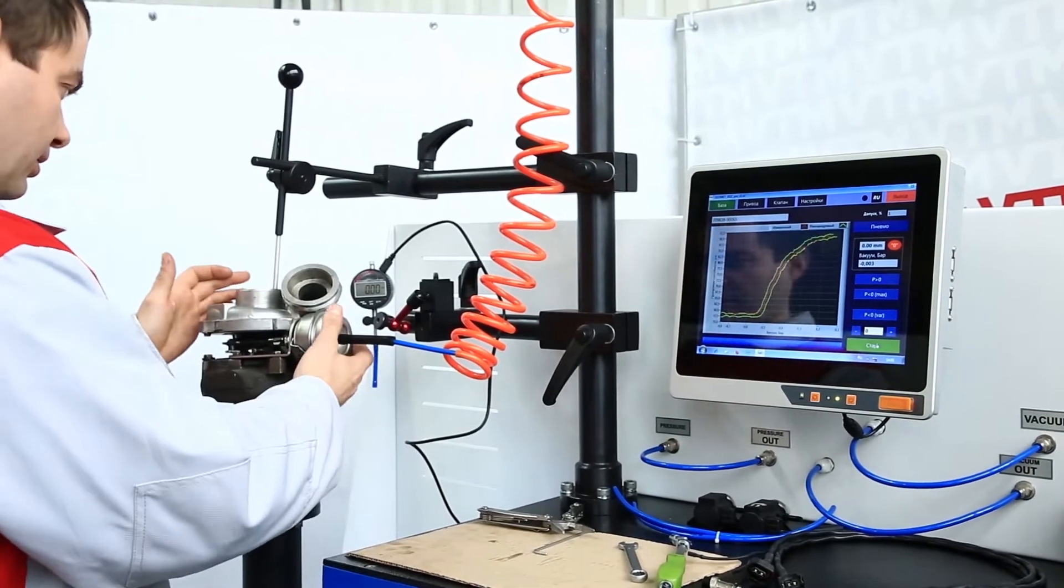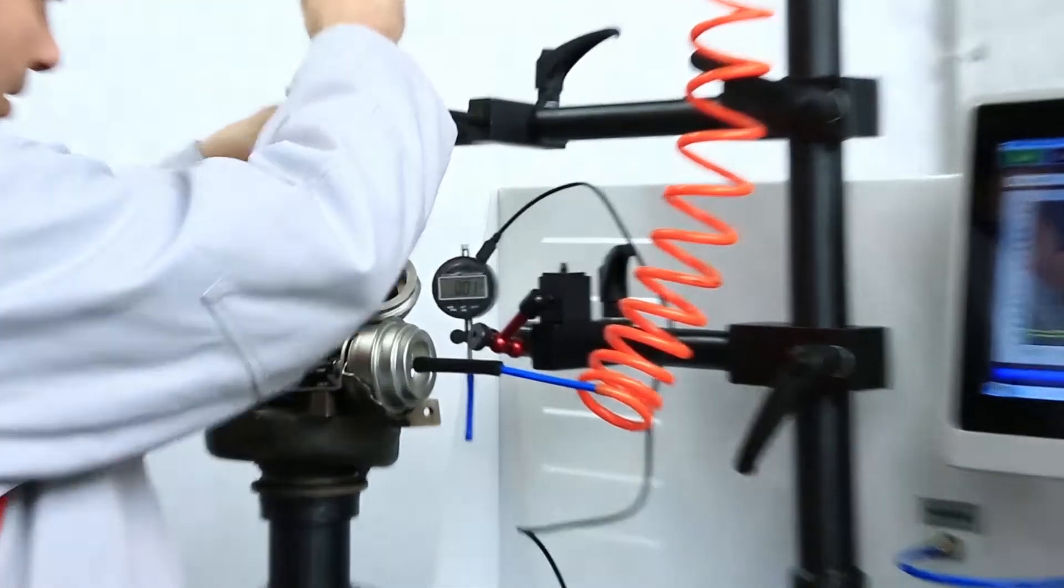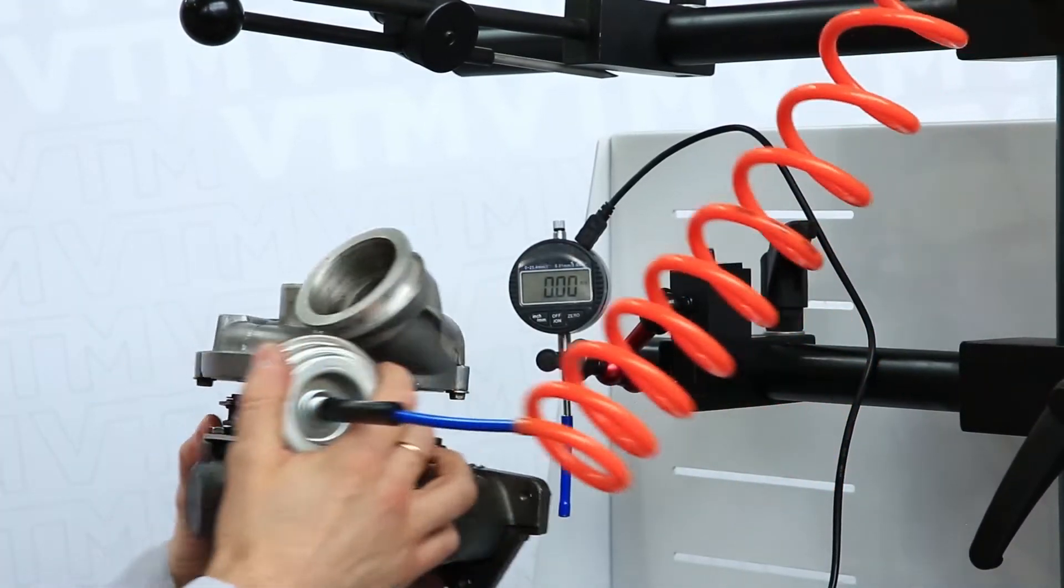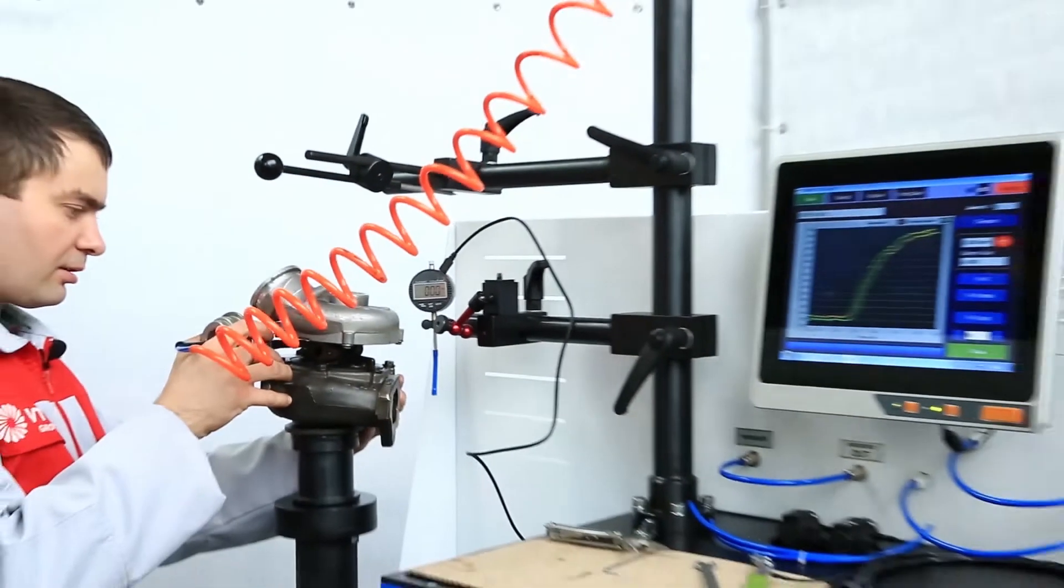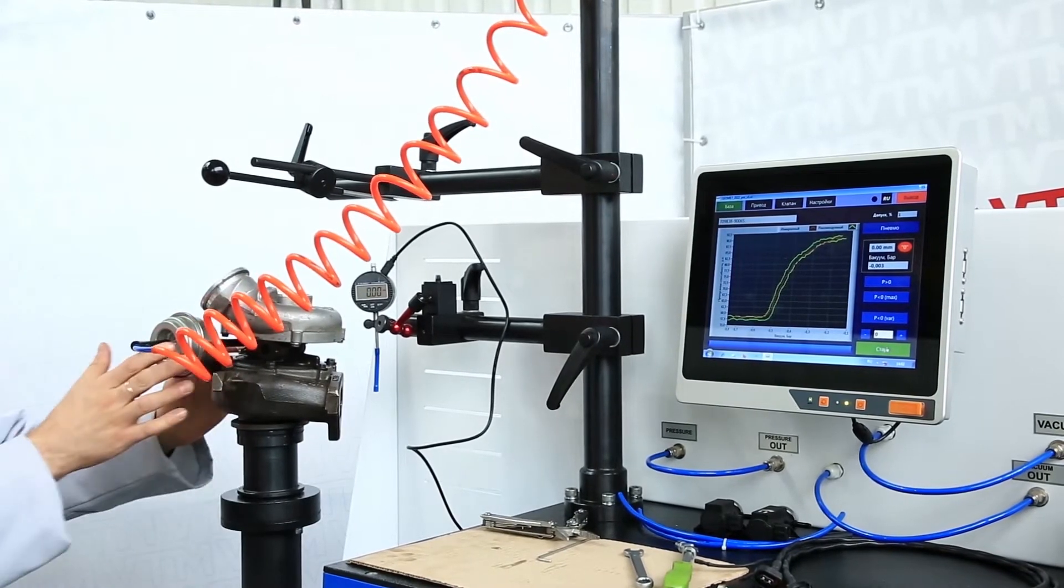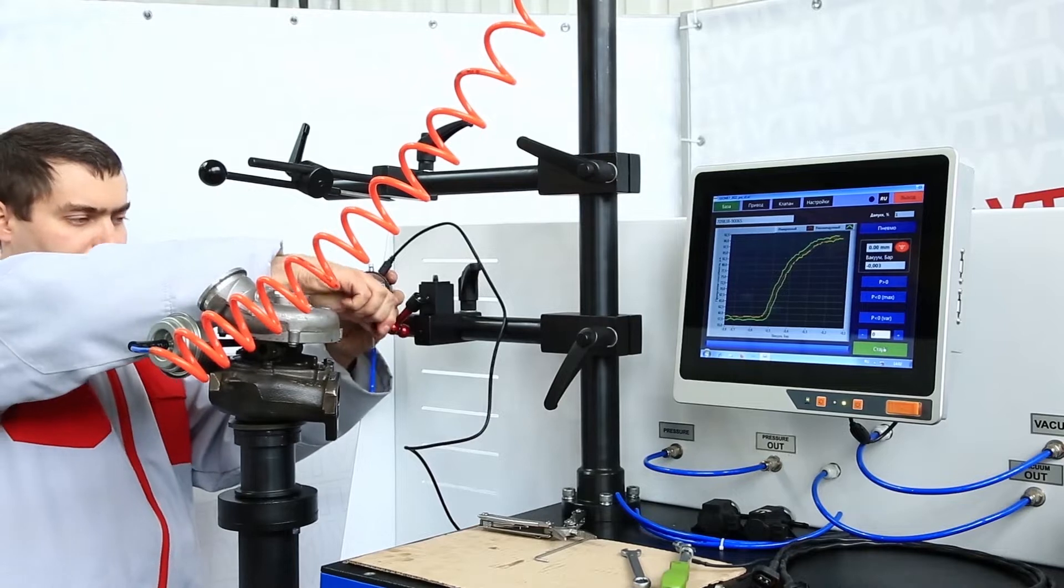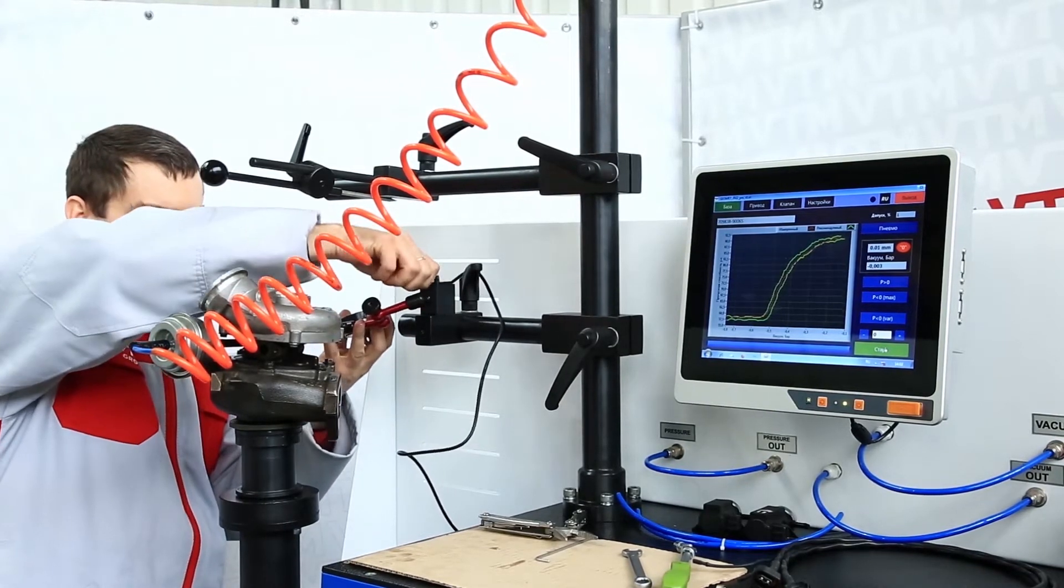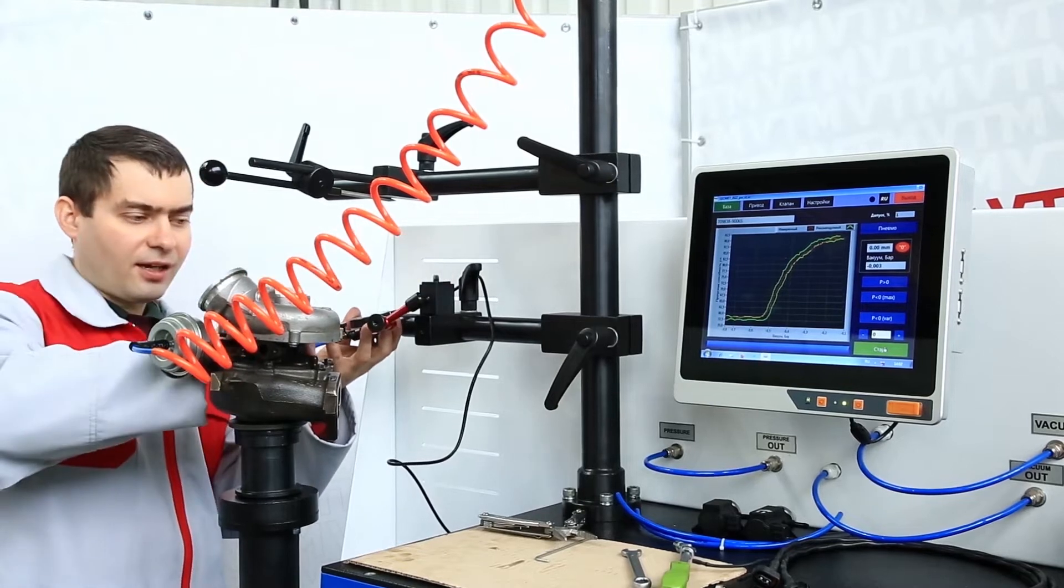The indicator is needed in order to check the operation of the vacuum actuator. To do this, we need to put the turbine in an appropriate way so that we can put a magnetic indicator to the thrust.